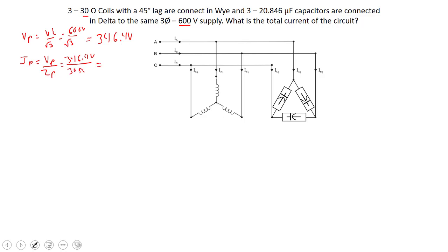That's 346.4 volts divided by our 30 ohms, and that comes to approximately 11.55 amps. So we know that the line current and the phase current are the same thing.